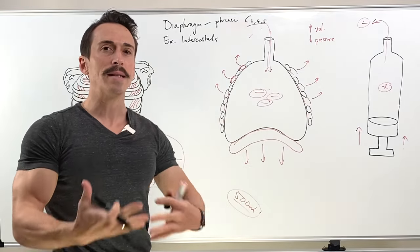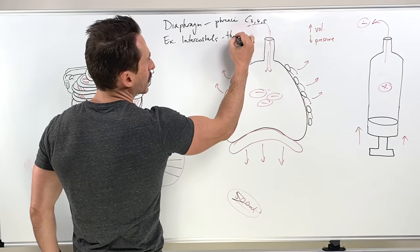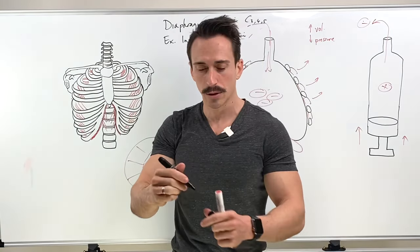If that doesn't contract, your basic normal quiet breath will not happen. The external intercostals, that's innervated by thoracic nerves, numerous thoracic nerves. They're the two major muscles for quiet breath.